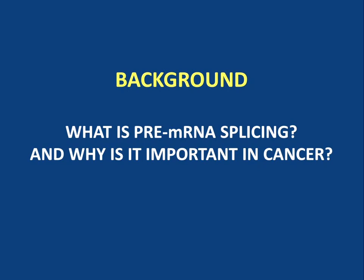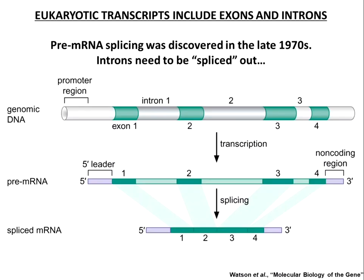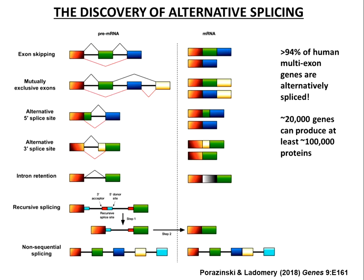So what is pre-mRNA splicing and why is it important in cancer? Splicing was discovered in the late 1970s. The discoverers, Roberts and Sharp, eventually got the Nobel Prize for their pioneering work. Essentially, genes made of DNA produce pre-mRNA transcripts — precursors of messenger RNAs that need to be processed in the nucleus. Pertinent to today's talk is the process of splicing, where we have exons and introns. These introns need to be removed from the pre-mRNA to make the mature spliced messenger RNA — that is the reaction of splicing, which is biochemically quite complex.